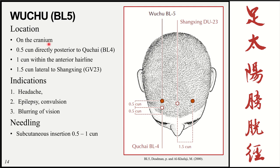Bladder 5 is also on the cranium — half a cun from bladder 4, making it one cun from the hairline, still on that 1.5 cun lateral line. Functions are very similar: headache, epilepsy, convulsion, and blurring of vision — all related to the path of the meridian. Insertion is exactly the same: 0.5 to 1 cun subcutaneous.